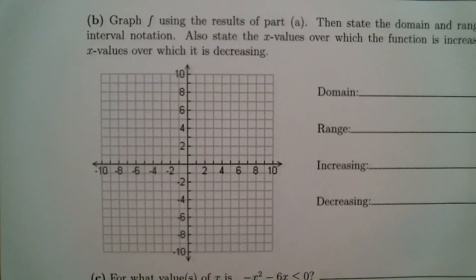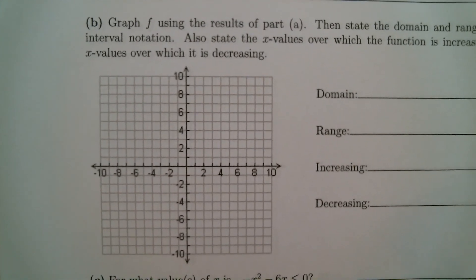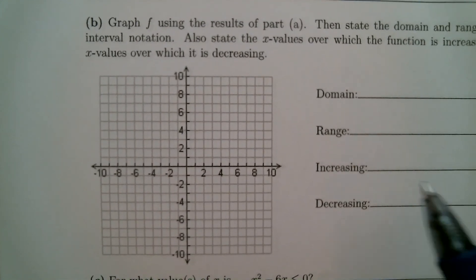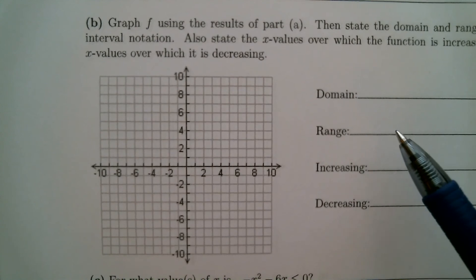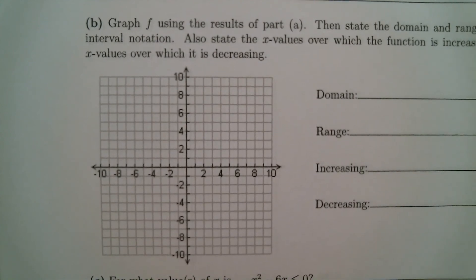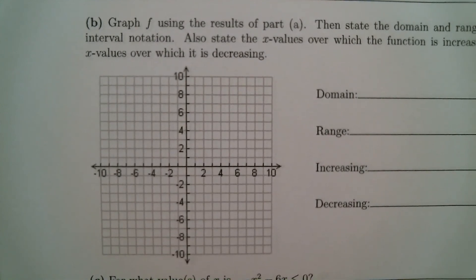Once we have the parabola, we're going to write down the attributes of the graph, such as the domain, the range, where it's increasing, and where it's decreasing.